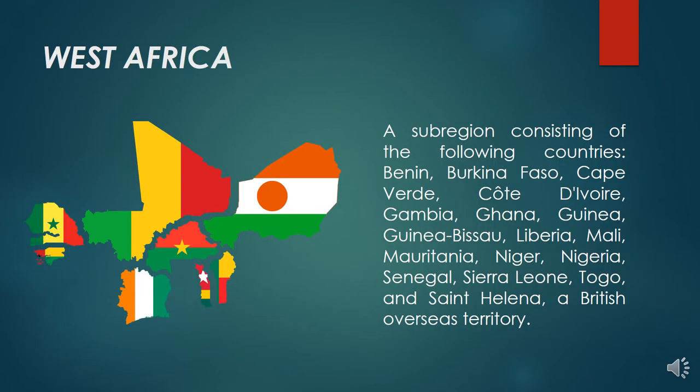West Africa is a sub-region consisting of the following countries: Benin, Burkina Faso, Cape Verde, Côte d'Ivoire, Gambia, Ghana, Guinea, Guinea-Bissau, Liberia, Mali, Mauritania, Niger, Nigeria, Senegal, Sierra Leone, Togo, and Saint Helena, a British Overseas Territory.